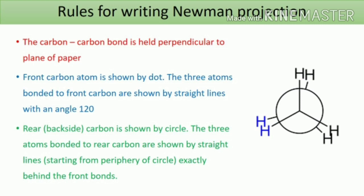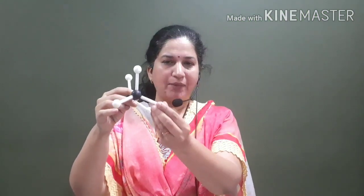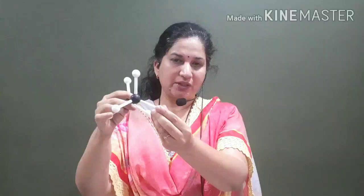Let us summarize the rules for writing a Newman projection. The carbon-carbon bond is held perpendicular to the plane of paper. The front carbon atom is shown by a dot, and its three bonded atoms are shown by straight lines at 120-degree angles. The rear or back carbon is shown by a circle, and its three bonded atoms are shown by straight lines starting from the periphery of the circle.